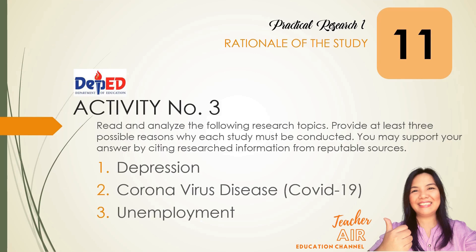Now that you already have an idea of what the rationale of the study is, let's have Activity Number 3. Read and analyze the following research topics and provide at least three possible reasons why each study must be conducted. You may support your answers by citing research information from reputable sources. Number one: depression. Number two: coronavirus disease or COVID-19. And number three: unemployment. You have 30 minutes to complete Activity Number 3.